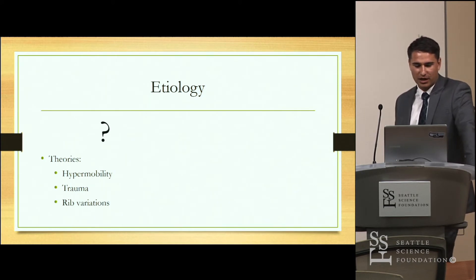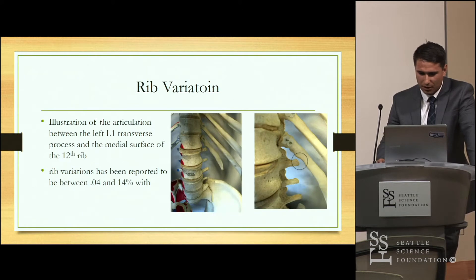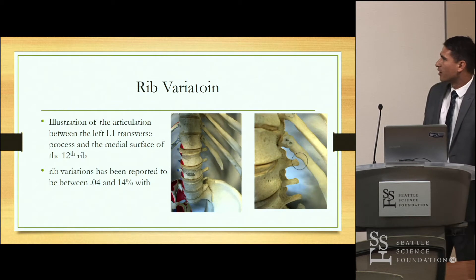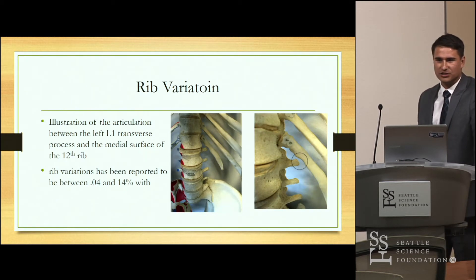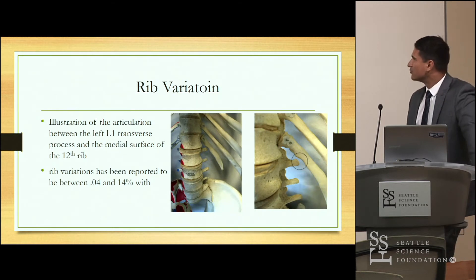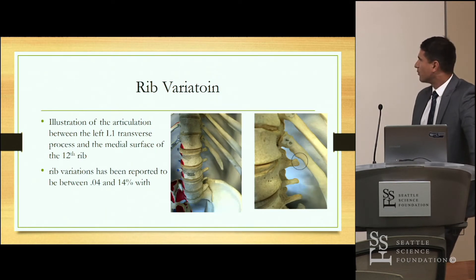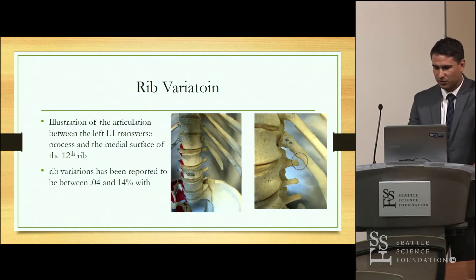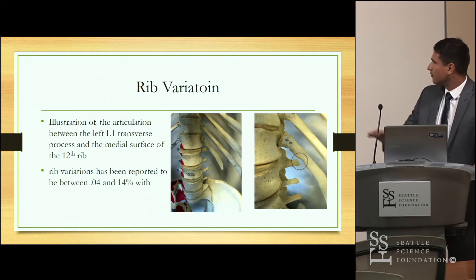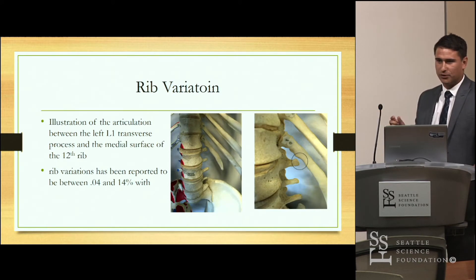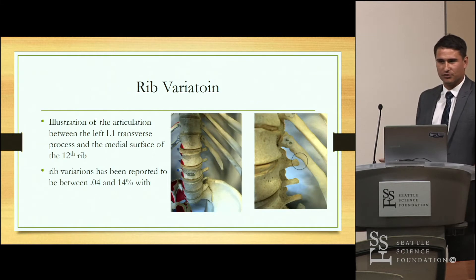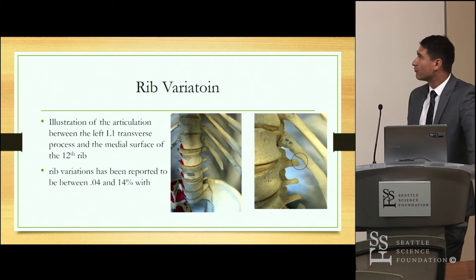Other theories include direct or indirect trauma. The one we're going to discuss more in depth is rib variations, which have been reported to occur in 0.04 to 14% of cases, with cervical ribs being the most common variation. This illustration provided by Dr. Tubbs shows articulation between the lumbar transverse process and the 12th rib. That articulation point could cause irritation to the 12th spinal nerve as it traverses along the 12th rib — a possible etiology we've brought to the forefront, as it's never been described in the literature.